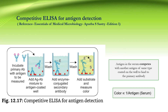In competitive ELISA, primary antibody and patient serum containing antigen are incubated separately, and then the antigen-antibody complex is added to the microtiter well plate. The wells are pre-coated with the same type of antigen, and hence the antigen in the serum competes with another antigen of the same type coated on the well to bind the primary antibody. The rest of the steps are the same. The major difference comes in the result: colour development is inversely proportional to the amount of antigen present in the serum, whereas in all other types of ELISA, it was directly proportional to the antigen present.